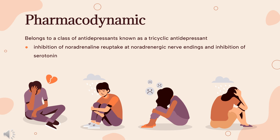Desipramine exhibits greater noradrenergic reuptake inhibition compared to the tertiary amine TCA imipramine. In addition to inhibiting neurotransmitter reuptake, desipramine down-regulates beta-adrenergic receptors in the cerebral cortex and sensitizes serotonergic receptors with chronic use, with an overall effect of increased serotonergic transmission. Antidepressant effects are typically observed 2–4 weeks following the start of therapy, though some patients may require up to 8 weeks prior to symptom improvement. Patients with more severe depressive episodes may respond quicker than those with mild symptoms.